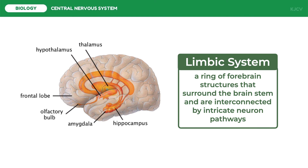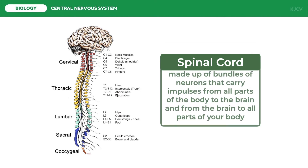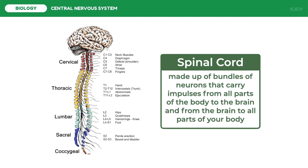The spinal cord is made up of bundles of neurons that carry impulses from all parts of the body to the brain and from the brain to all parts of the body. The spinal cord is a long slender cylinder of nerve tissue that extends from the brain stem, about 45 centimeters or 18 inches long and 2 centimeters in diameter — about the size of your thumb.